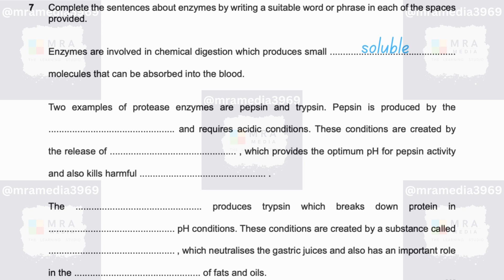Two examples of protease enzymes are pepsin and trypsin. Pepsin is produced by the stomach and requires acidic conditions.